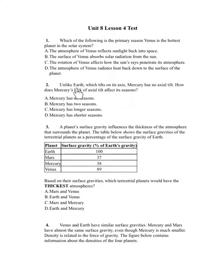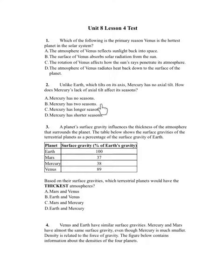Number 2. Unlike Earth which tilts on its axis, Mercury has no axial tilt. How does Mercury's lack of axial tilt affect its seasons? A. Mercury has no seasons. B. Mercury has two seasons. C. Mercury has longer seasons. D. Mercury has shorter seasons.